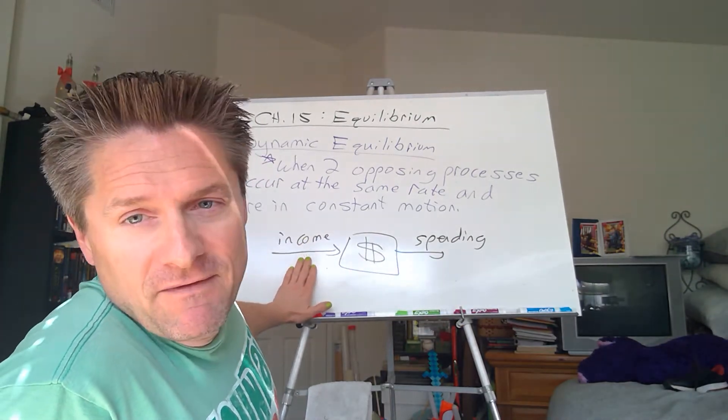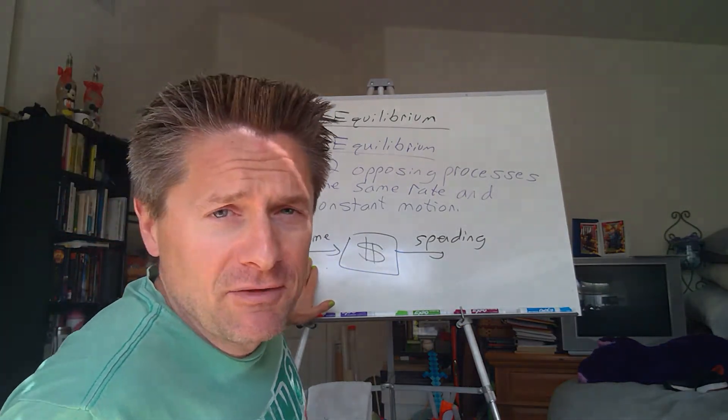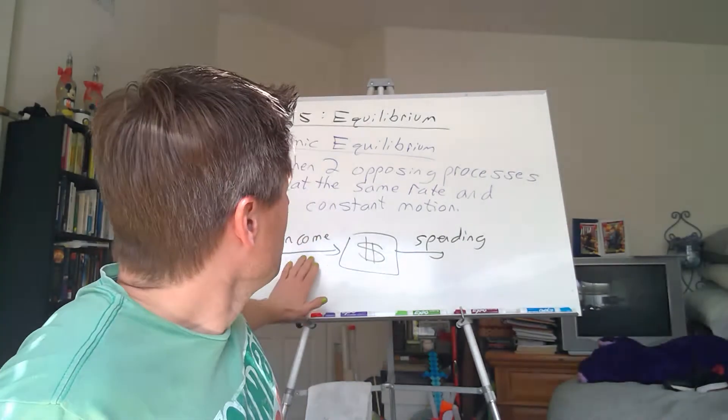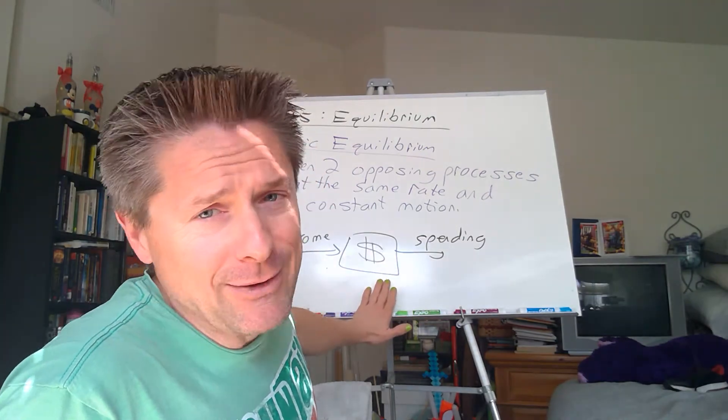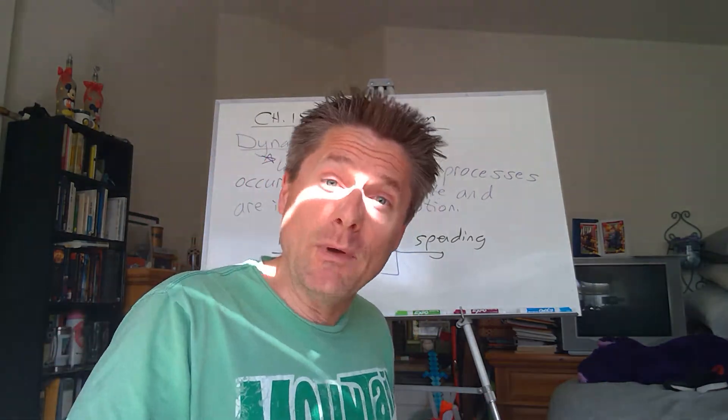Now, if you make $50,000 a year or $10,000 a year or $300,000 a year, doesn't matter what it is. But if, say, we're making $5,000 a month and you're spending $5,000 a month, your bank account is not going to change. But money's going in. Money's going out.